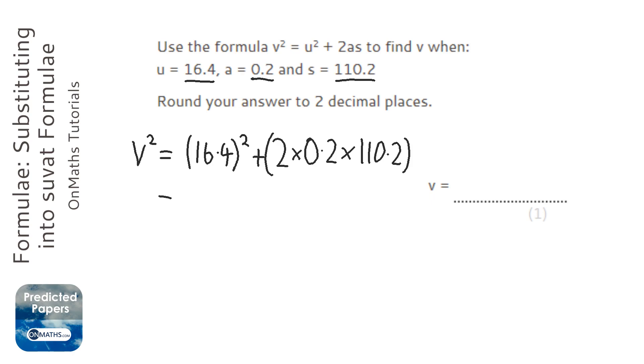Now if we type that into our calculator, so 16.4 squared plus 2 times 0.2 times 110.2, it comes up with a fraction. If I press s to d, it comes up with 313.04.